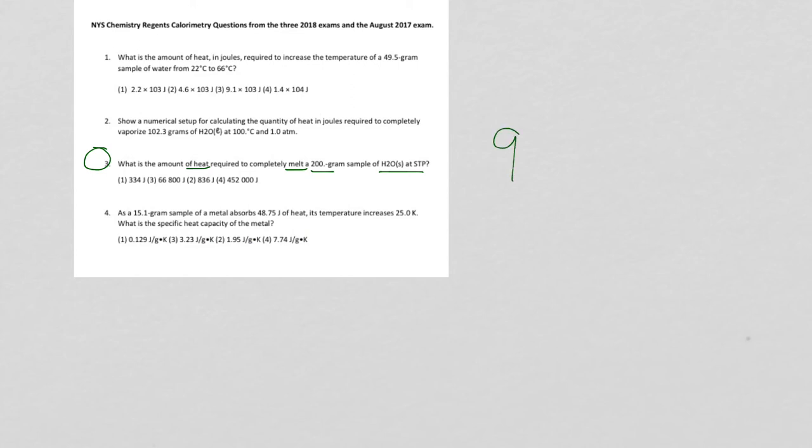So I'm going to go back. I'm going to write the equation down, Q is equal to M H F. And even though it's not required folks, I would strongly recommend that you do this so you don't make mistakes. 200 grams, and we said it was 334 joules per gram. So it's just 200 times 334. And even I'm going to use a calculator because I don't want to make a careless mistake. And the answer is 66,800 joules, which is here.